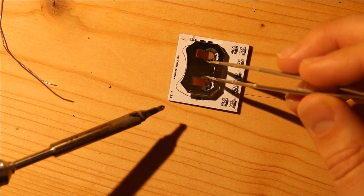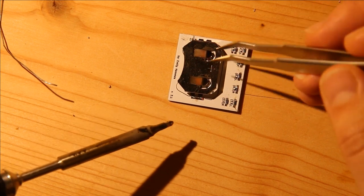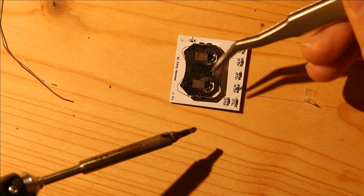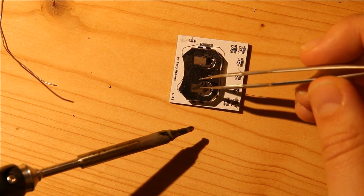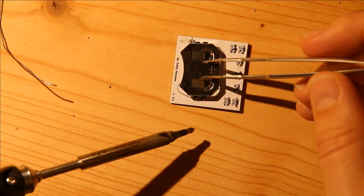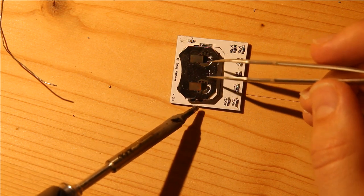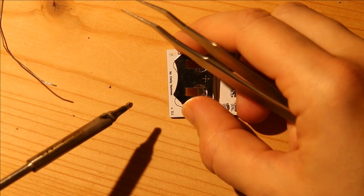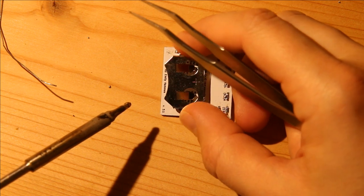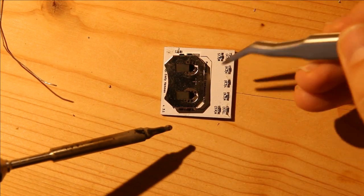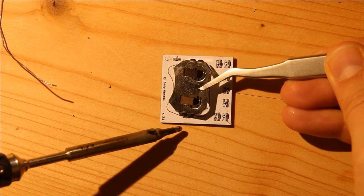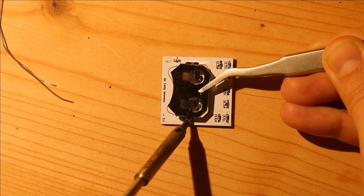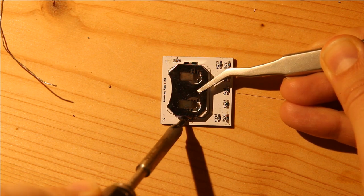And it's important to use tweezers at this point because the metal on the battery holder gets very hot. So I carefully place this where it needs to go. And this is really the hardest part for me. And then I just hold it and melt that solder.